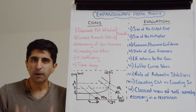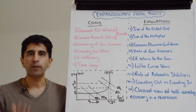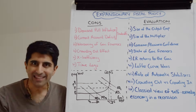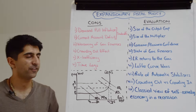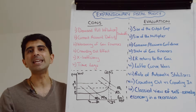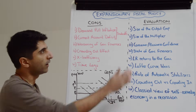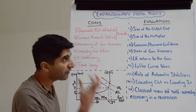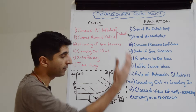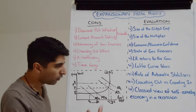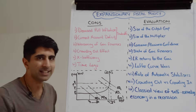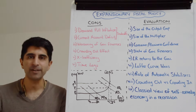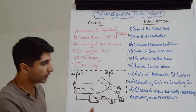Now let's look at key evaluation points on the effectiveness of expansionary fiscal policy — points that showcase the debate between Keynesian and classical economists. The first is to question the size of the output gap. If the economy is close to full employment at Y1 with a very small negative output gap, expansionary fiscal policy is less likely to be effective in boosting growth and reducing unemployment.